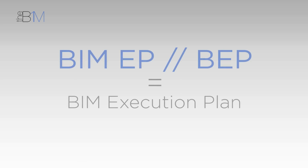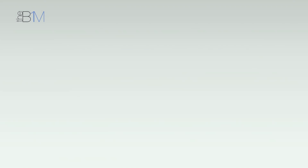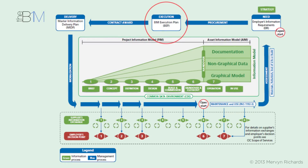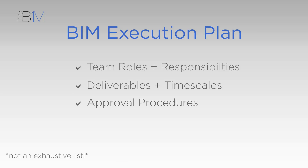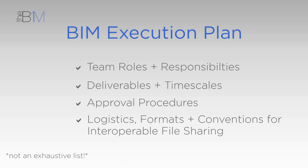At number six is BIM EP. A BIM EP, sometimes shortened to BEP, is a BIM Execution Plan — a document shared and agreed by all parties in the project team. It sets out how they will work together through the BIM process to deliver the requirements of the EIRs. BIM Execution Plans will typically detail team roles and responsibilities, deliverables and the timescales associated with them, approval procedures and logistics, and formats and conventions for interoperable file sharing.